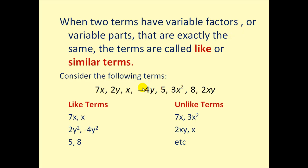Consider the following terms. Seven x and x are like terms because they have the same variable part. Two y squared and negative four y squared are like terms, and so are five and eight.